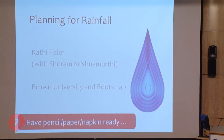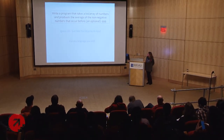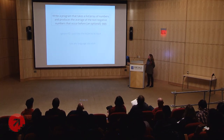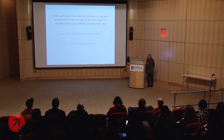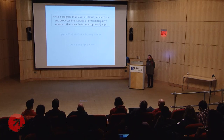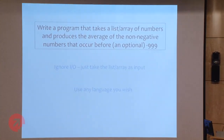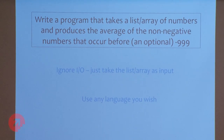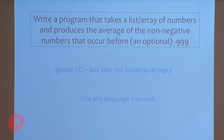This is joint work with Shreem Krishnamurthy, who's also at Brown University. I'm going to start by asking you to all work on a small programming problem. Get your pencil, paper, napkin, whatever you need. I want you to write or sketch out a program that takes a list or an array, whichever you prefer, of numbers, and produces the average of the non-negative numbers that occur before minus 999, which may or may not be in the list. If it's not there, you're just going to do the whole list. Don't think about I/O, just take the list or array as input, use any language or language subset you want. We're just curious to see how the people in this room think of this problem. I'll give you a minute to plan out your solution.